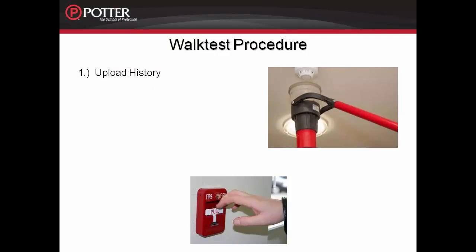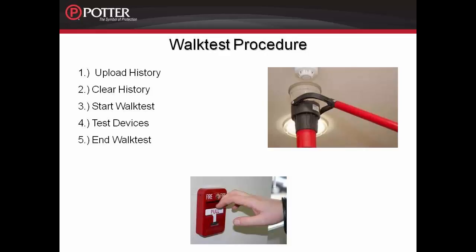To recap the walk test procedure: first, upload the history to maintain an event log, then either print or save the history file. Next, clear the panel history. After clearing the history, start walk test and test all system devices. When finished, end walk test at the fire alarm control panel. Then upload the panel history to create a test report and either print or save this file. The last step is to clear the history at the fire alarm control panel. The panel is now set until the next inspection.